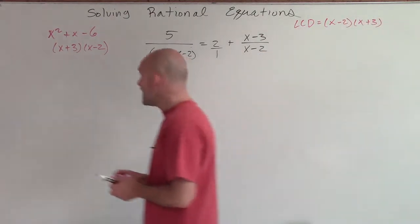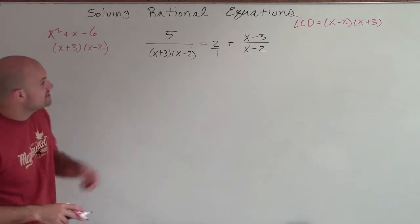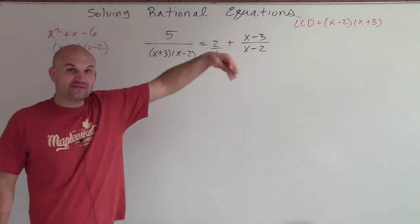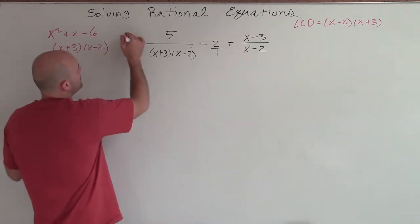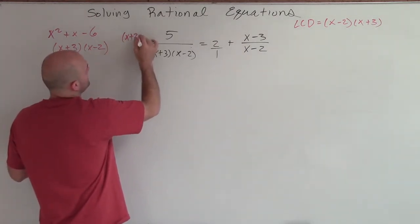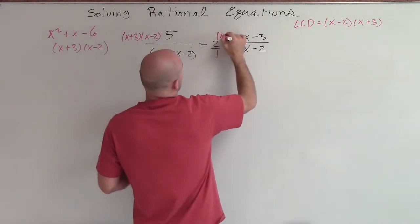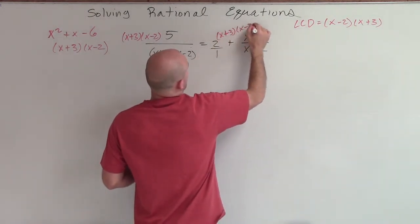All right. So now, we need to eliminate our fraction. So once we simplify it, the next step is to eliminate all of our fractions. And to do that, we're going to multiply by the LCD, every single term by the LCD.